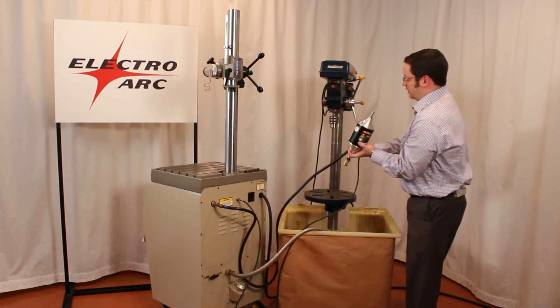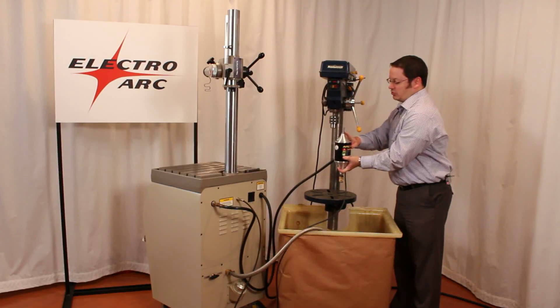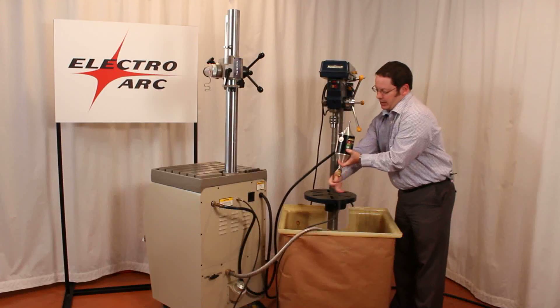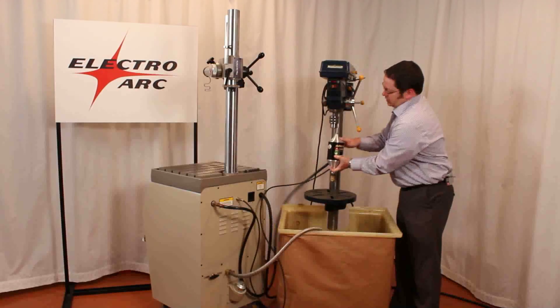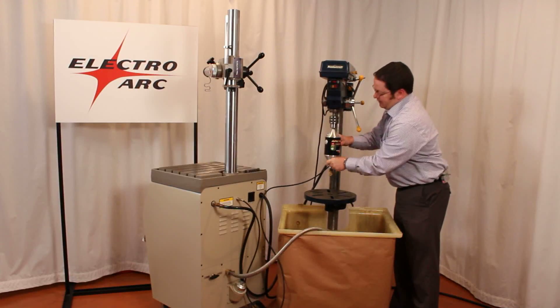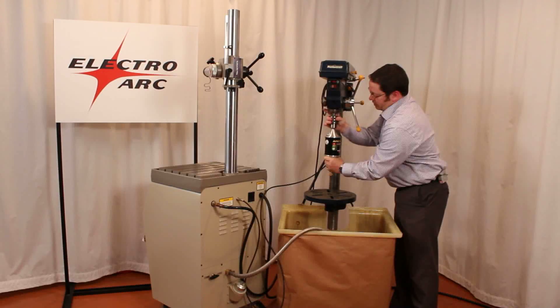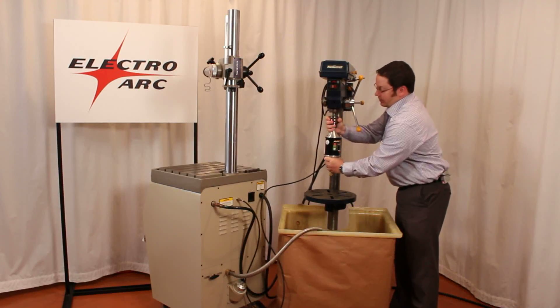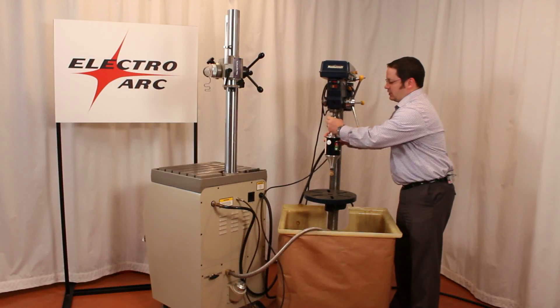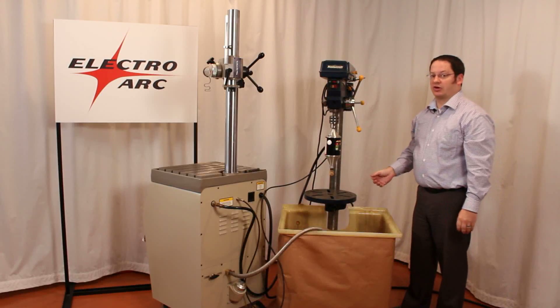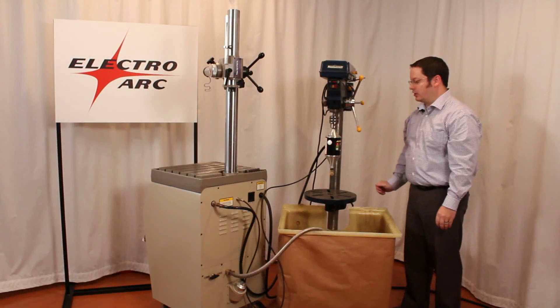You can take this and it's got a half inch by two inch shank on there, and all you need to do is chuck it up into any type of drill press, lathe, mill, or any of your CNC type tools. It's as easy as that. Chuck it in there, tighten it down, and you're ready to go.